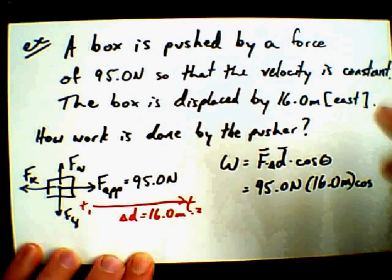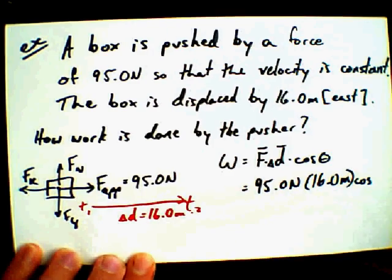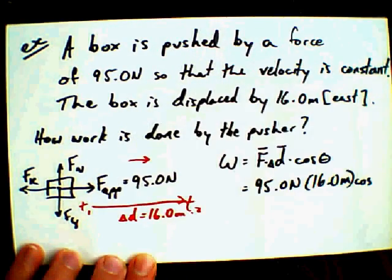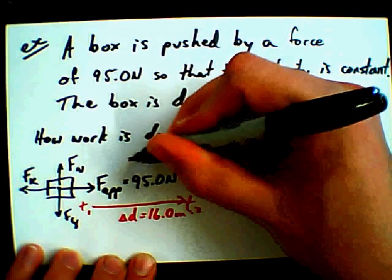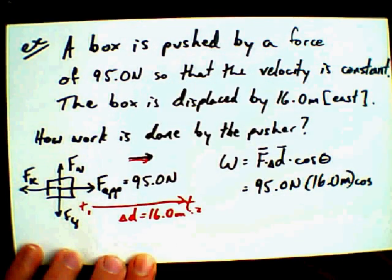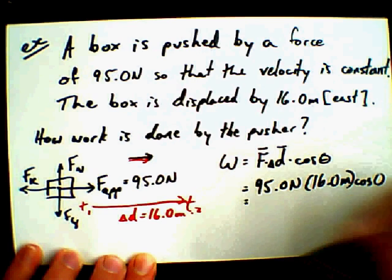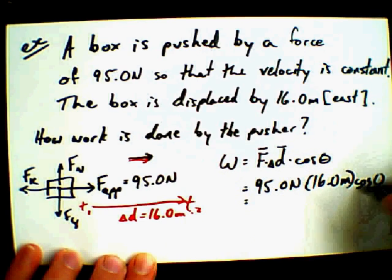But when I do cosine of theta, let's take a look at this. My displacement is to the right, like this. My applied force by the pusher is also to the right. What's the angle between those two vectors? Zero. So cosine of zero. We said it before, we'll say it again. What's cosine of zero equal to? One. Beautiful.